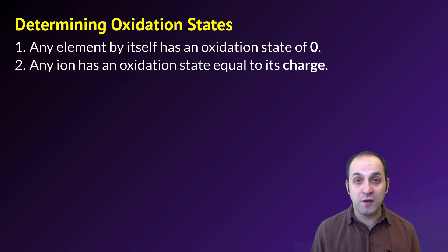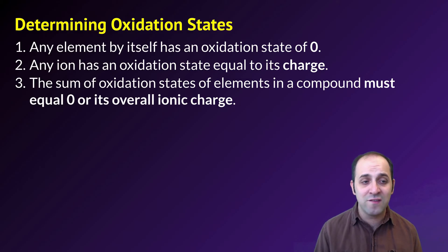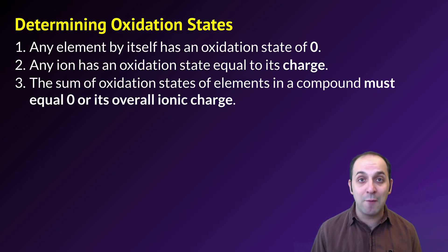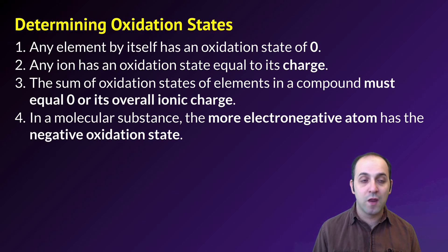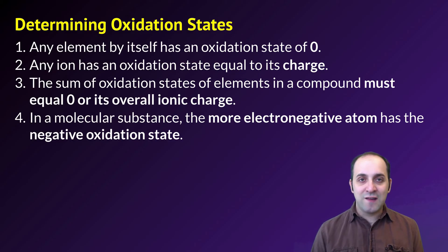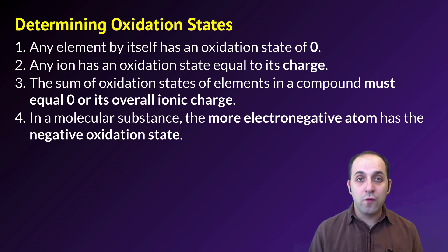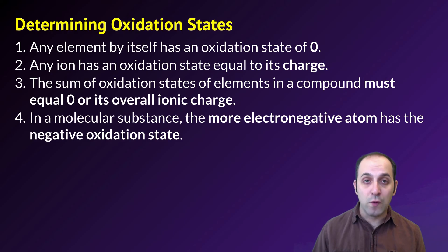The third rule is that the sum of the oxidation states of elements in a compound must either equal zero if that compound is electrically neutral, or if that compound is an ion — like a polyatomic ion — then the sum of the oxidation states has to equal the overall ionic charge in the compound. Finally, when we're talking about molecular substances, the more electronegative atom will have the negative oxidation state, and the less electronegative atom will have the positive oxidation state. We'll expand these rules later when we talk about electrochemistry, but for right now these are all the rules you need to determine whether or not a reaction is a redox reaction.